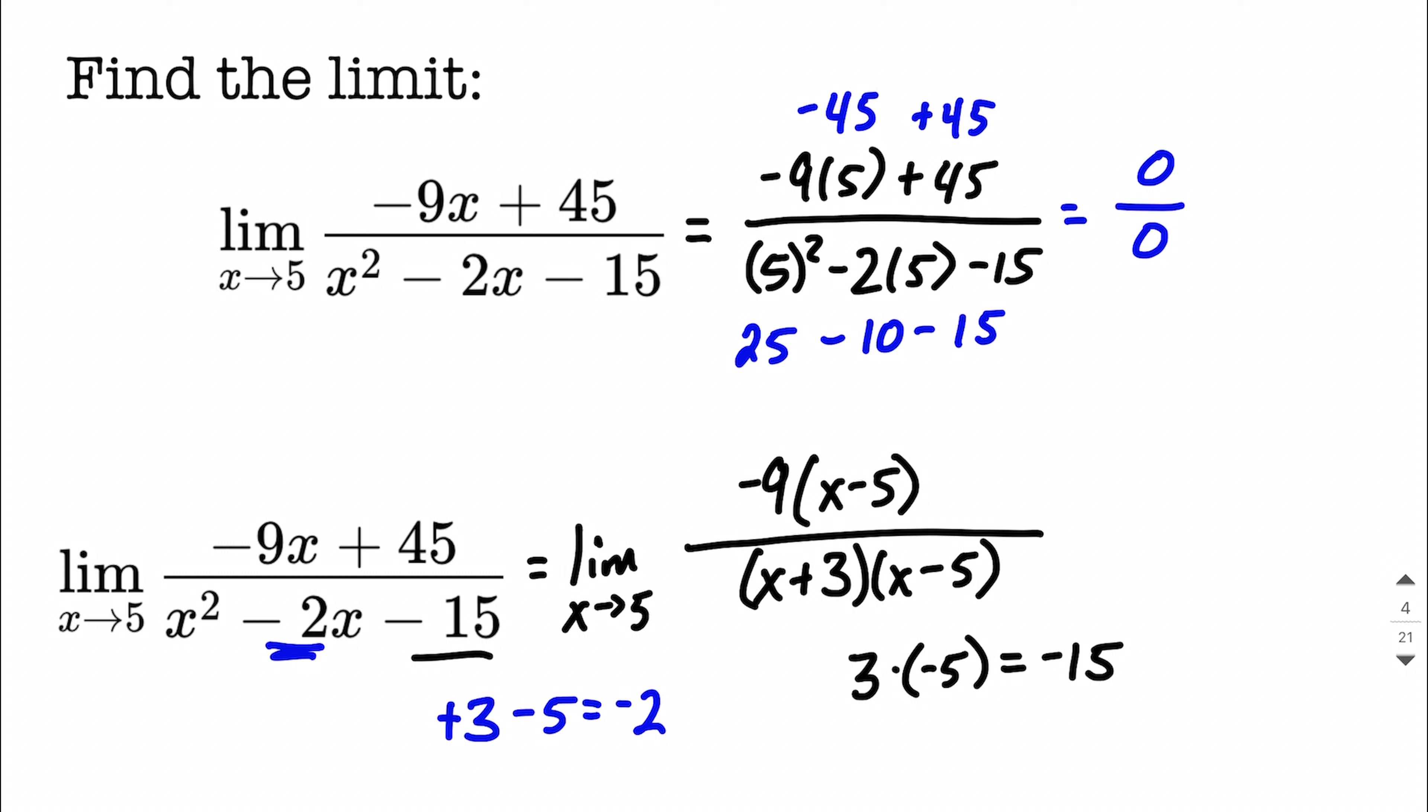At this point, we can reduce to lowest terms because we're taking a limit. We have an x minus 5 in the numerator and an x minus 5 in the denominator. So we can simplify, and because we're taking a limit, we're allowed to simplify. From here, we're left with a negative 9 in our numerator and an x plus 3 in our denominator.